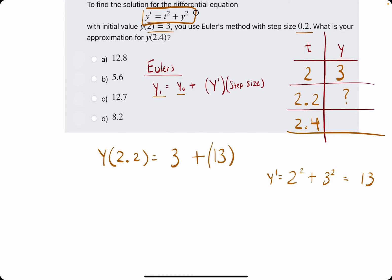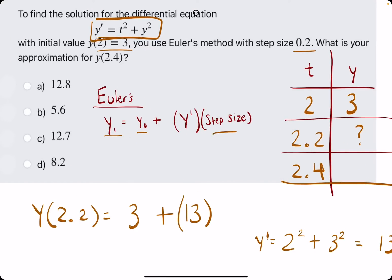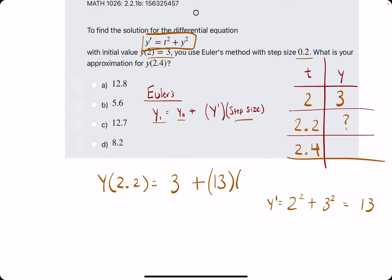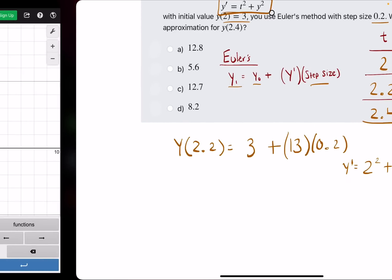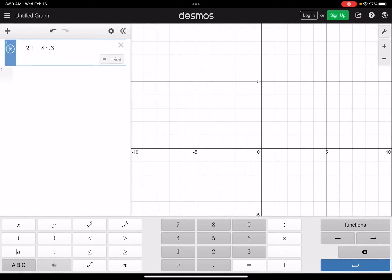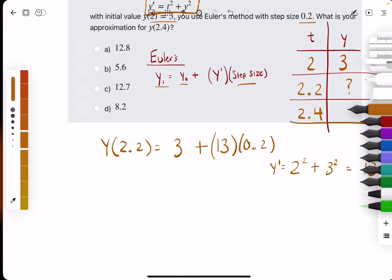So we have 13 for the y prime, and the step size will always remain the same within each problem, so just 0.2 in this case. So let's go ahead and calculate this. We will have 3 plus 13 times 0.2, and that will give us 5.6.